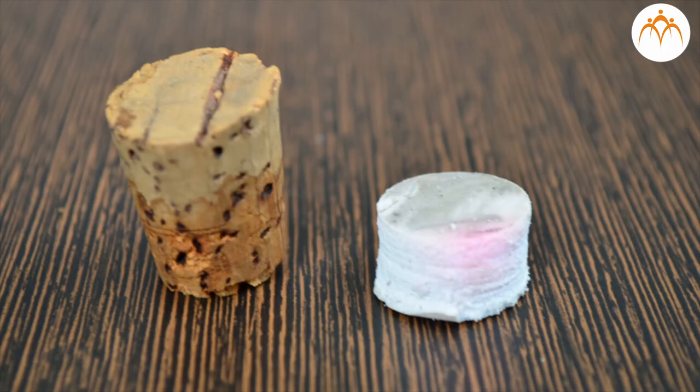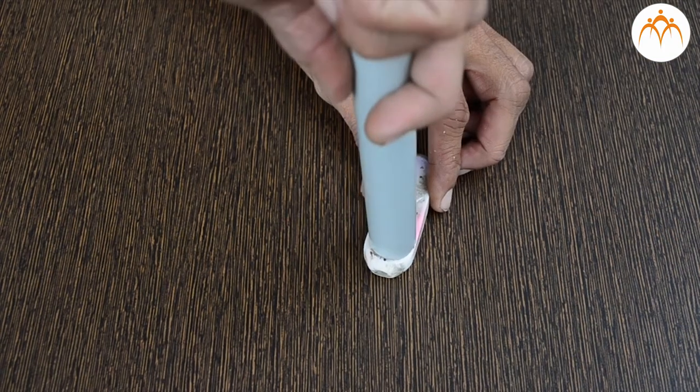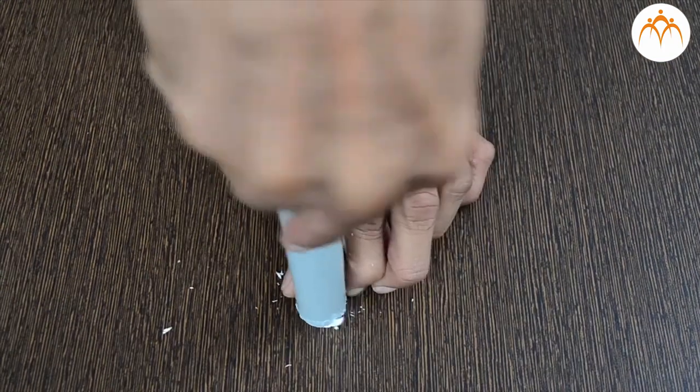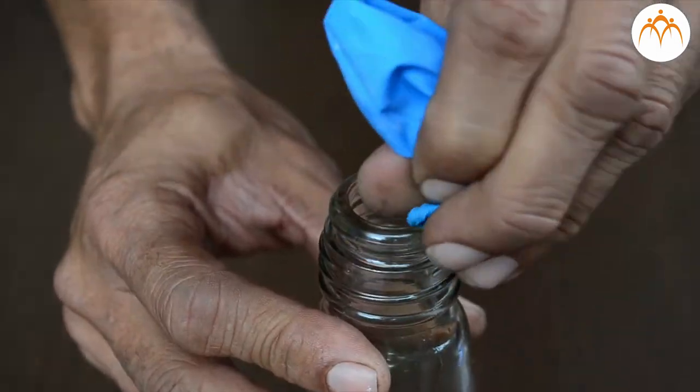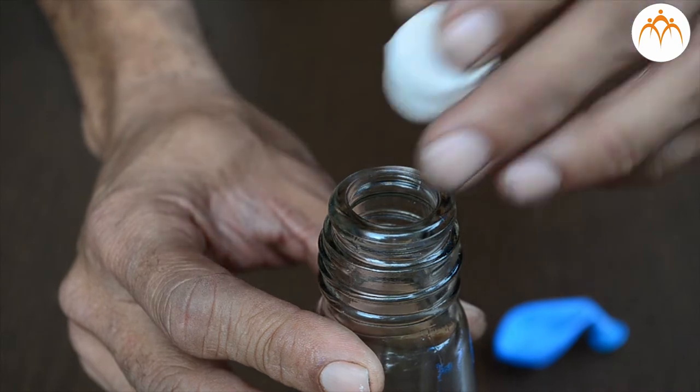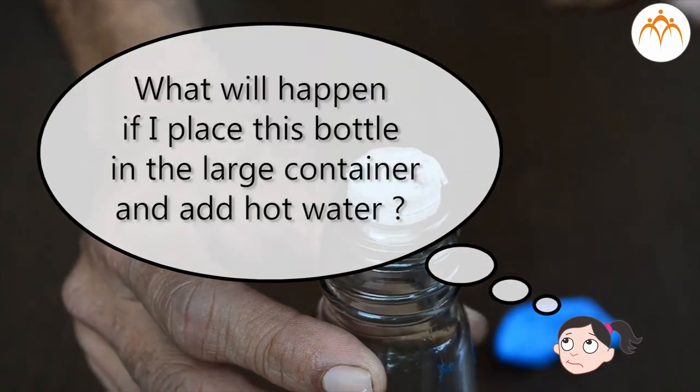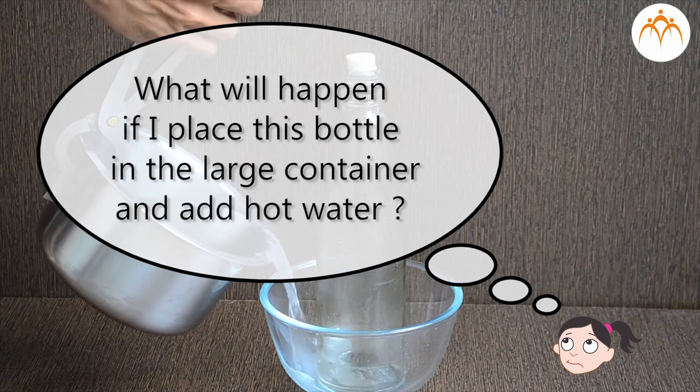I will make cork for the glass bottle from the eraser. PVC pipe is used to cut it into round shape. Let me remove balloon and place this cork instead. What will happen if I place this bottle in large container and add hot water?